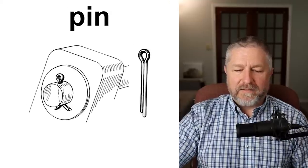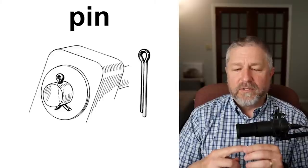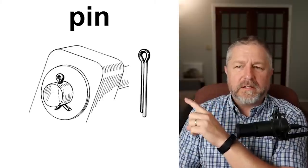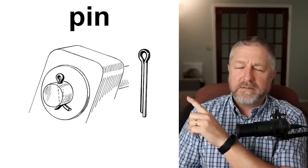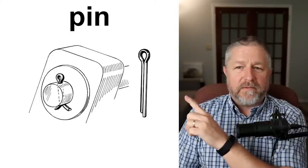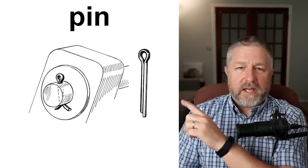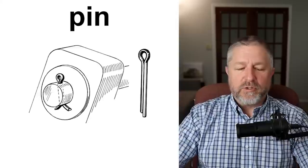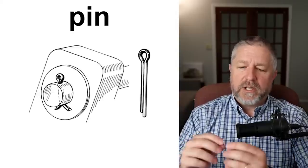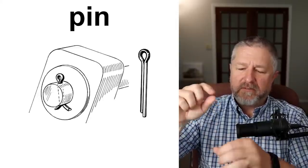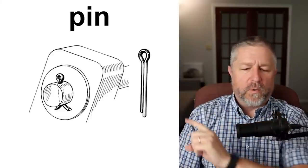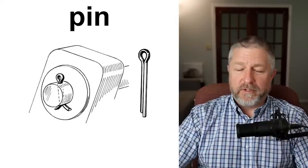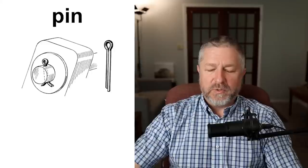Sometimes you will have a pin in the end of a bolt or in the end of a shaft. This is called a split pin or a cotter pin. Often when I fix my lawnmower, I have to take a pin out in order to remove certain parts. Generally in English, any small piece of metal that goes through a hole like that we would call a pin, and you can also use it as a verb — sometimes you need to pin things together.